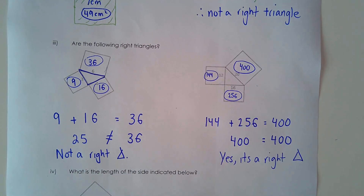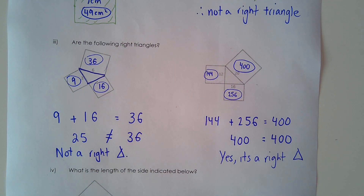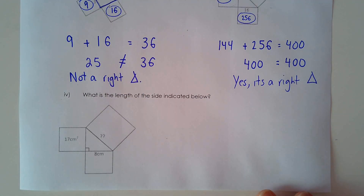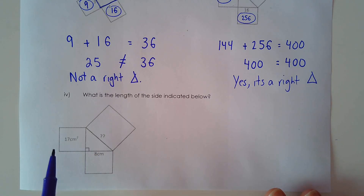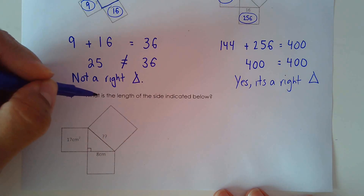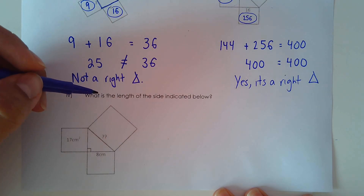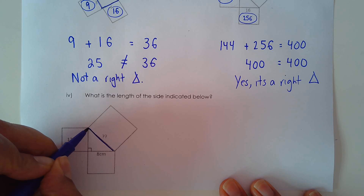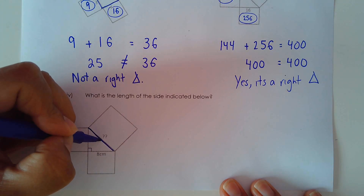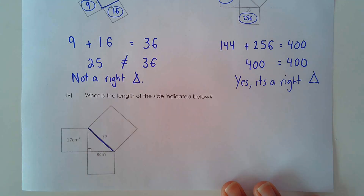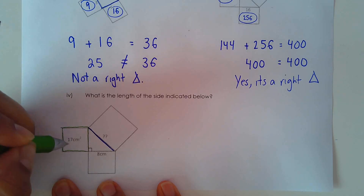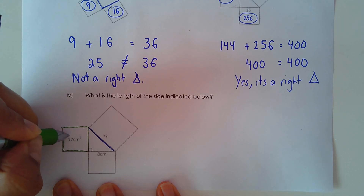I wanted to finish off with this last example. It's a little bit trickier, because sometimes you're given side lengths and sometimes you're given the area. The question asks: what is the length of the side indicated below? We're wanting to calculate the hypotenuse, because it's opposite the 90 degrees. The area for this square is 17 centimeters squared.